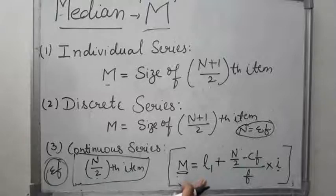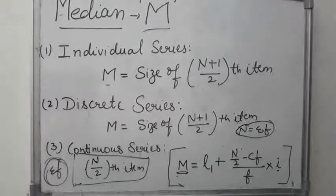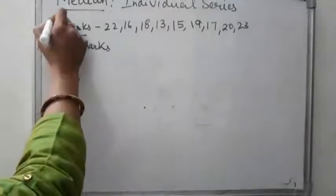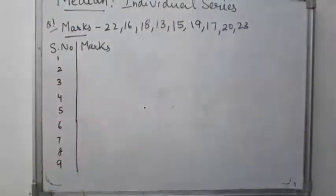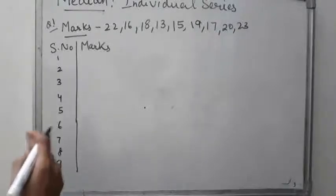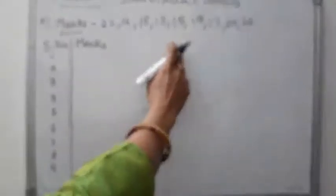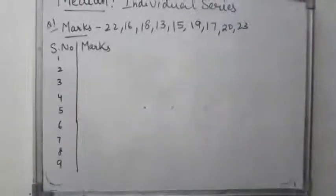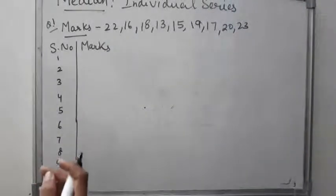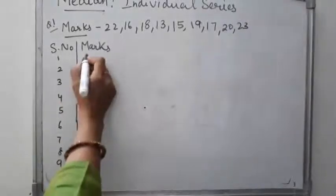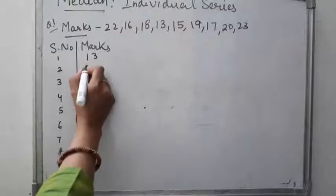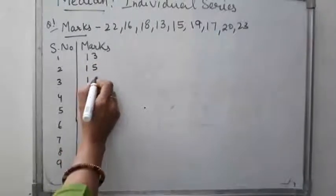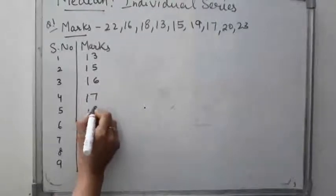Now we will see some examples. The first question is of individual series. We have to calculate the median marks of 9 students. First, we arrange the marks in ascending order: 13, 15, 16, 17, 18...